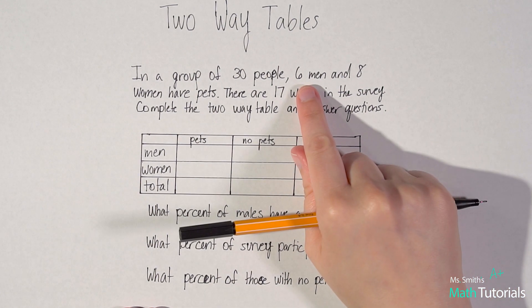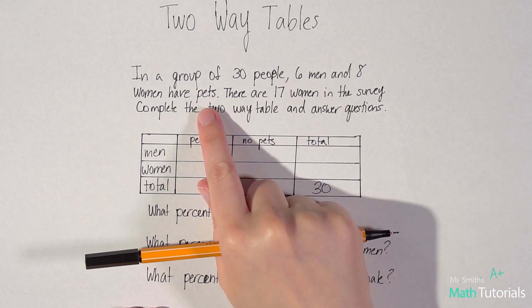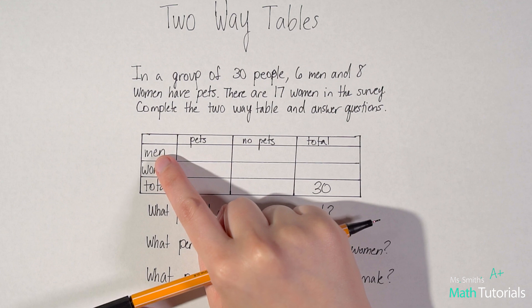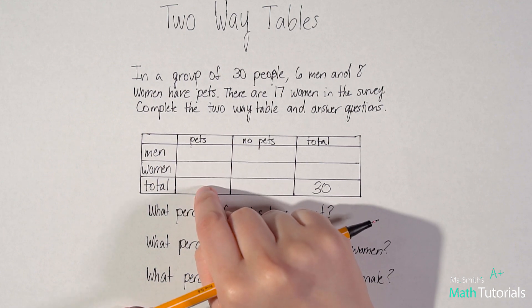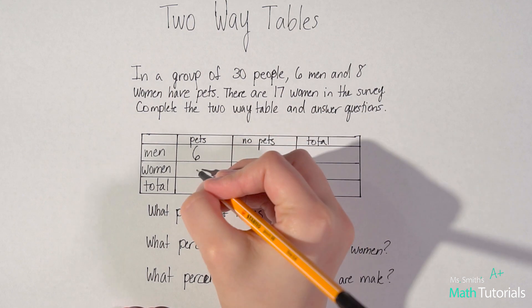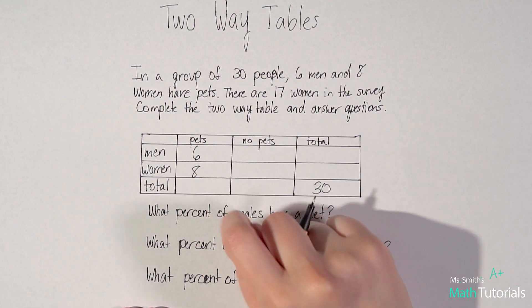It says six men and eight women have pets. So this is my column of people, men and women, and then the total number who have pets. So it says there are six men and eight women who have pets.